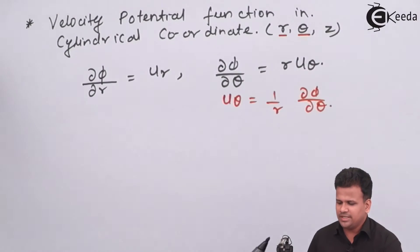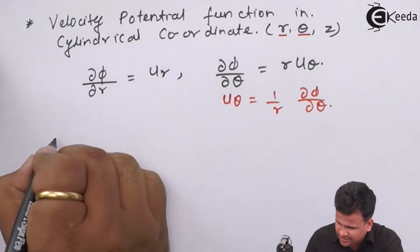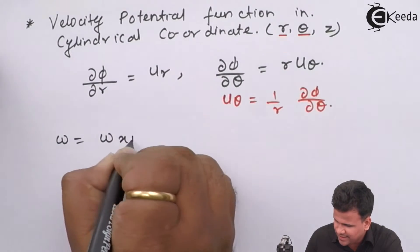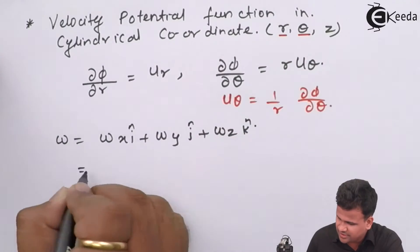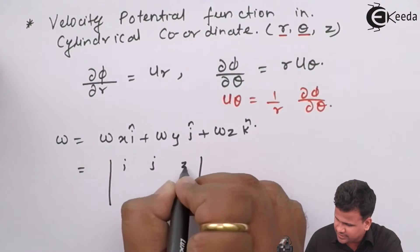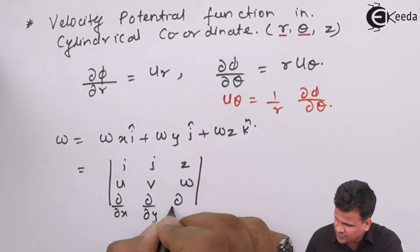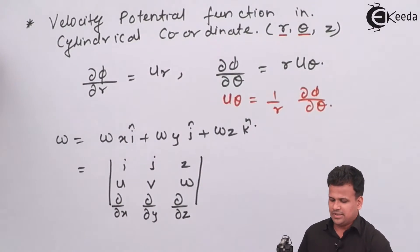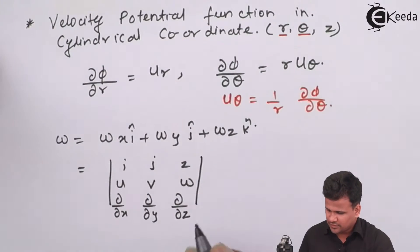We have already studied rotational flow and irrotational flow. For that, omega equals omega_x i-cap plus omega_y j-cap plus omega_z k-cap. This can be written as the determinant of i, j, k and u, v, w with dou by dou x, dou by dou y, and dou by dou z. This equation determines whether the flow is rotational or irrotational. Now let us see this in relation to the velocity potential function, calculating omega_z.